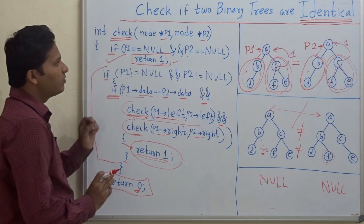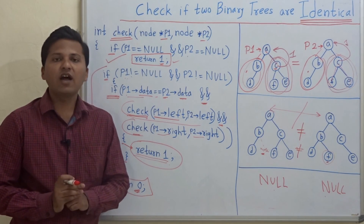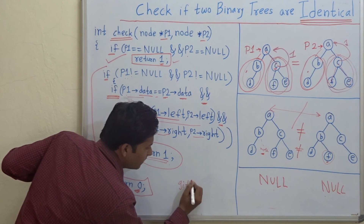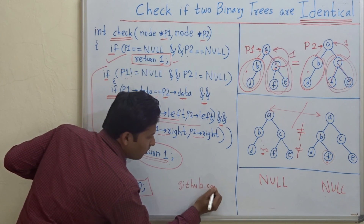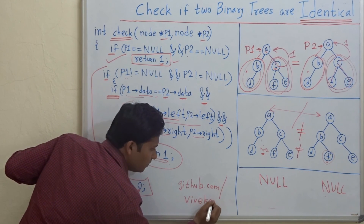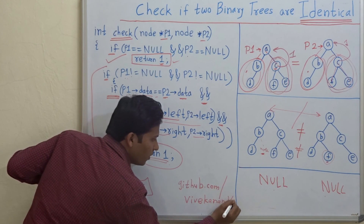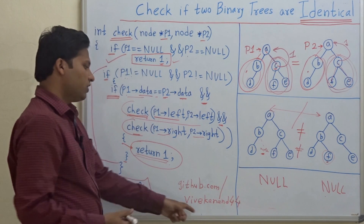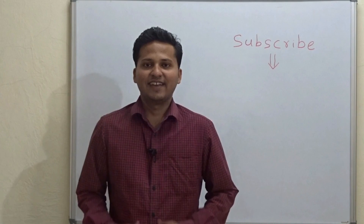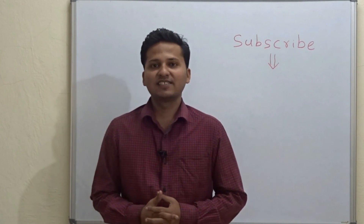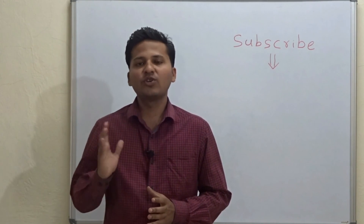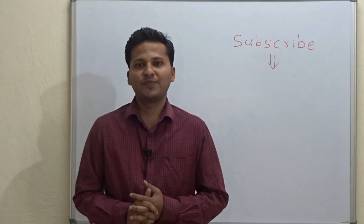This is how we write the program to check if two binary trees are identical or not. You can find the whole code on my GitHub link: github.com/vivekananda44. You can go there, see the code, and use it for your work. Thank you. Please subscribe to my channel as I post algorithm videos every day, and if you want a video on any particular topic, please mention it in the comments below. Thank you.